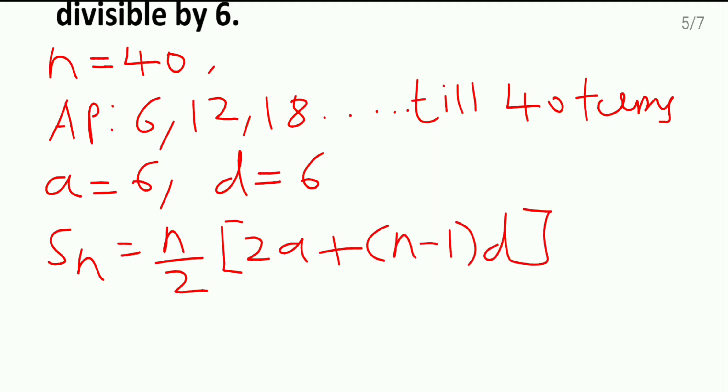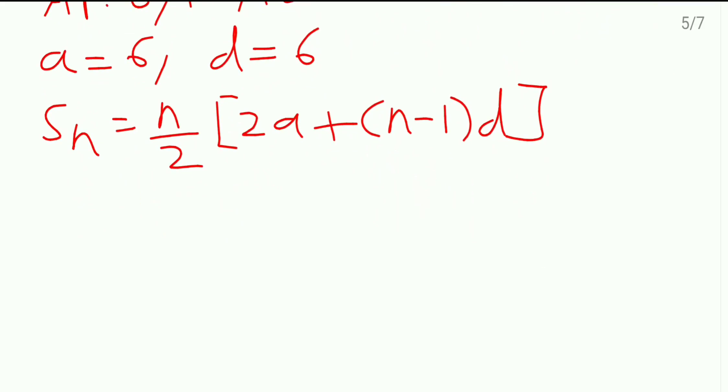We will substitute the values here. Sum of 40 terms: I replace n with 40, 40 by 2. Here 2 times the value of a is 6 plus 40 minus 1 will become 39. Value of d is also 6.